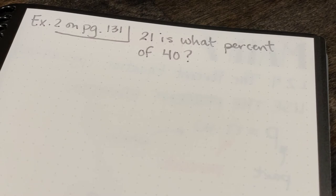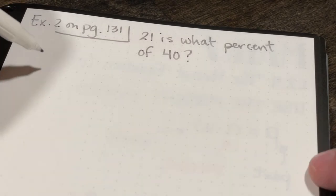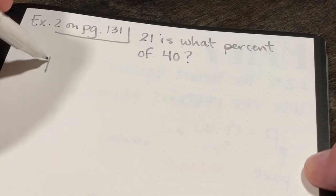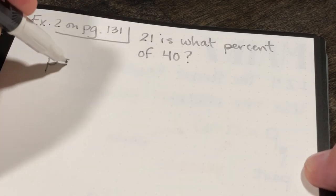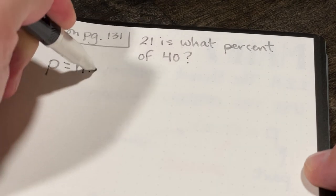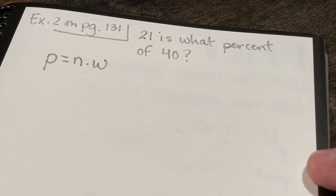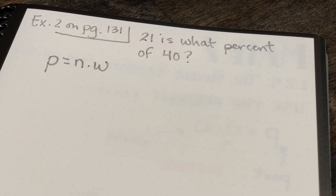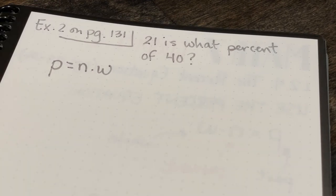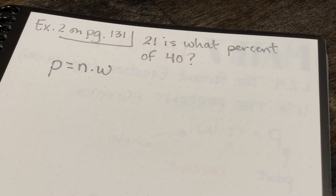In example 2 on page 131, we're trying to find out what percent 21 is of 40. So I'm going to start with my percent equation, which is p equals n times w, p being the part, n being the percent, and w being the whole.